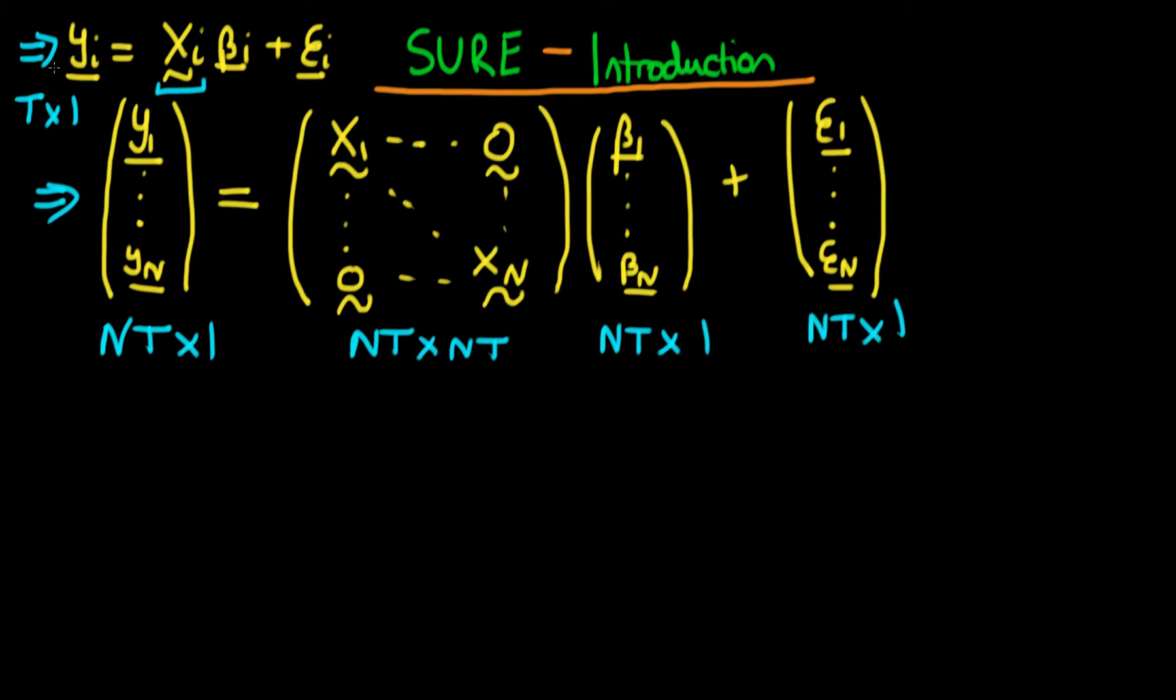So we've written our individual equations as a system, a matrix equation form, and just like we did for other matrix equations we can write this in a much simpler form. We could just say let's call this whole left hand vector y, forgetting about the subscript now, and that's equal to X times beta plus epsilon.